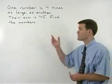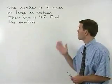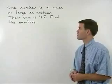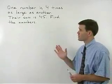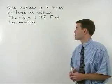Let's start by reading this problem through. One number is four times as large as another. Their sum is forty-five. Find the numbers.